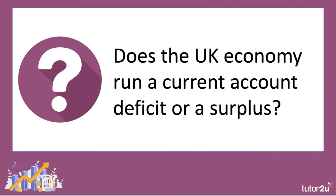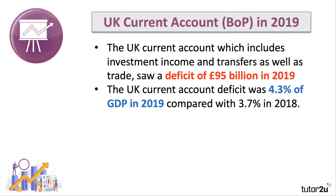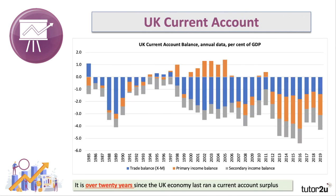Adding everything together, the UK runs a current account deficit. Last year the deficit was around £95 billion — just under £2 billion a week — which was just over 4% of GDP. It has been over 20 years since the UK last ran a current account surplus. This chart combines the trade balance in blue, the primary income balance in orange, and the secondary income balance in grey, and you can see that all three components are now negative.